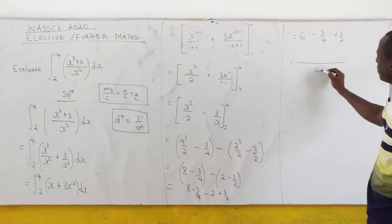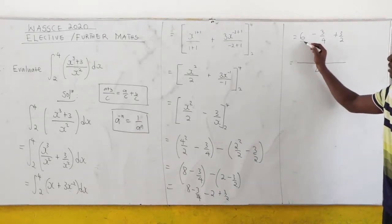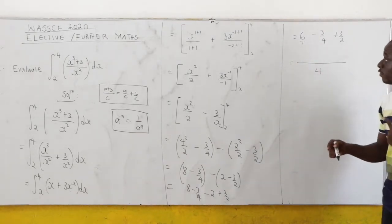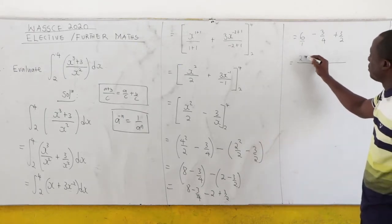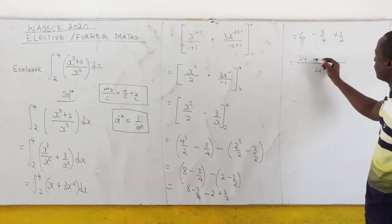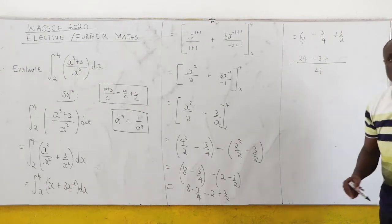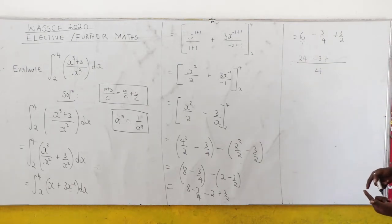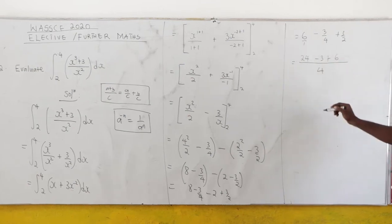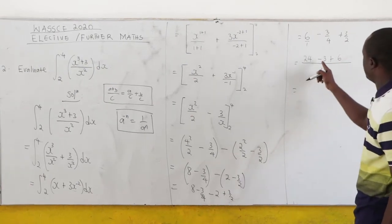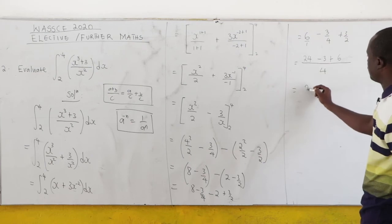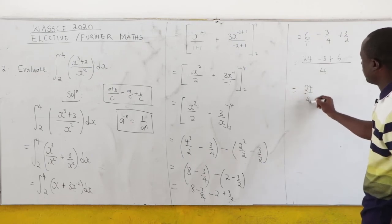Now let's find the LCM. The LCM here is 4. Every whole number is over 1, so 4 times 6, that is 24. Then minus 3. And then 2 going to 4, that is 2 times 3. So we have 6. So this will give us 27 all over 4, and this is just 6.75.